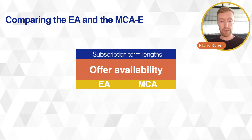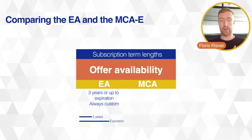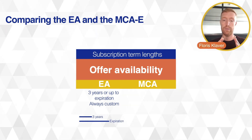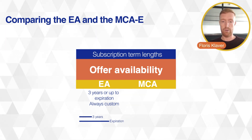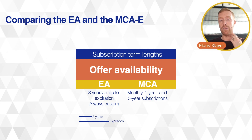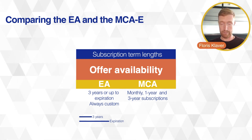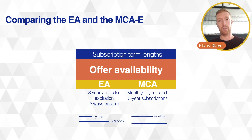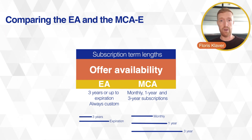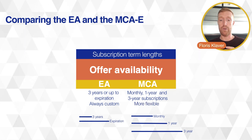Then the subscription term length. The EA always used to be a three-year term, unless Microsoft had you sign up to a five-year deal or you negotiated a shorter deal — that was always custom. Basically three years and then you renew or make other decisions. Within the MCAE you have the option to decide what you want: certain subscriptions can go on a monthly basis at a higher price, you can lock in for a year at a lower price point, and some offers even go for a three-year term.